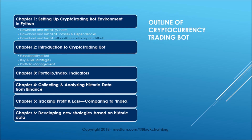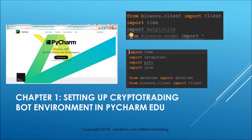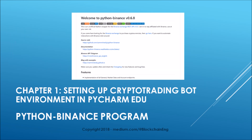We will go chapter by chapter, up to seven chapters, explaining how this cryptocurrency trading bot works — the functionality, the software, and how to get it set up. The first thing to do is install PyCharm, which is a Python interactive development environment. On the right-hand side are the libraries we'll be using, so you'll need to have these installed. One of the main reasons for using PyCharm is the ease of installation and setup, and you can also use pip.